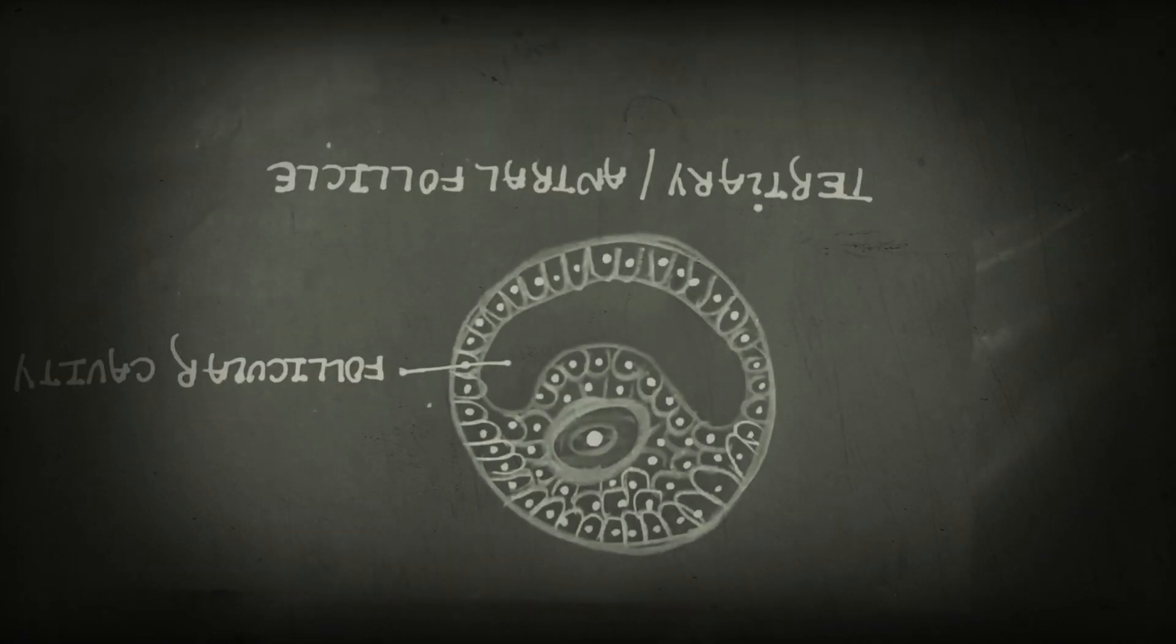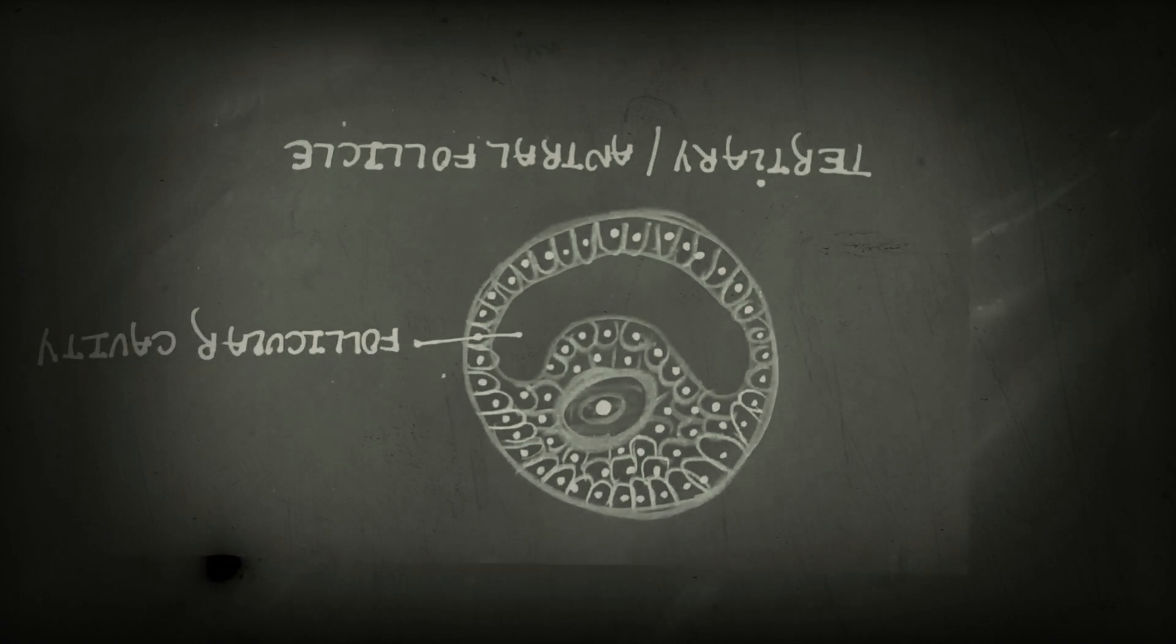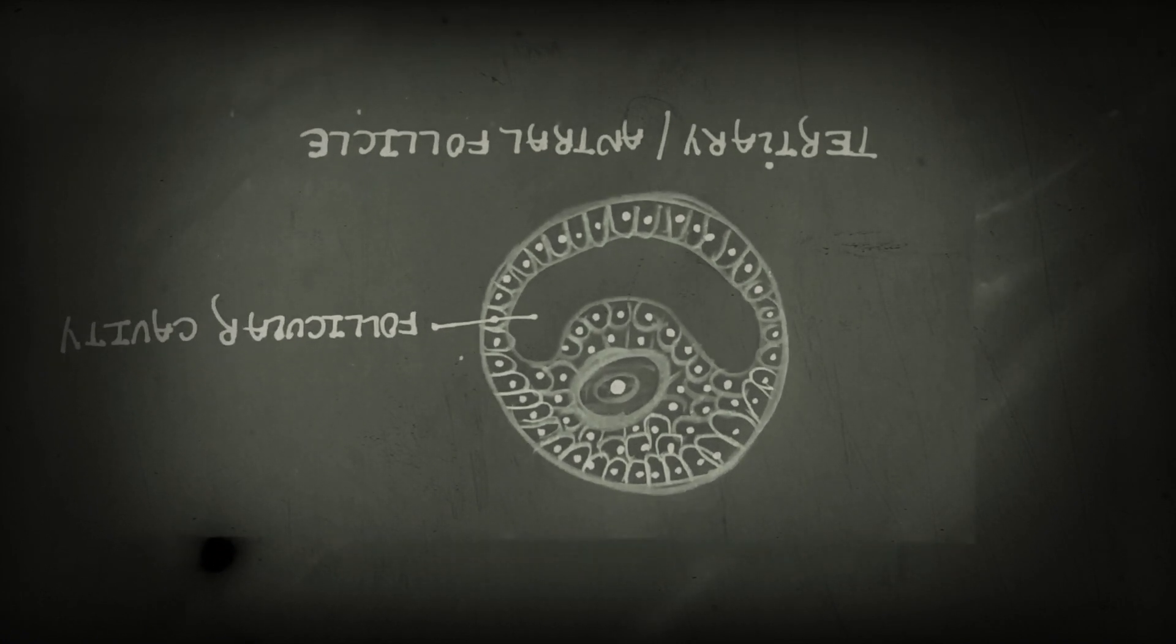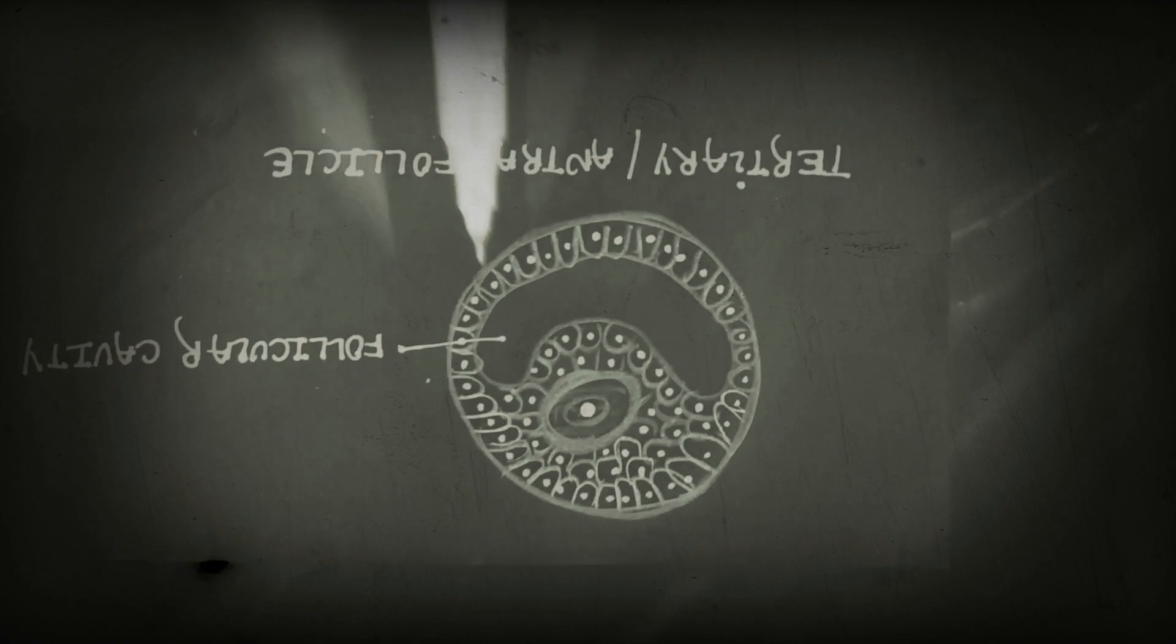These are our tertiary follicles, which we call antral follicles. We call them antral follicles because they have a cavity.